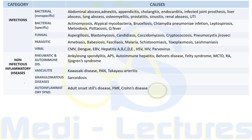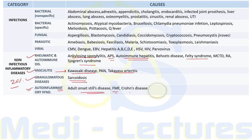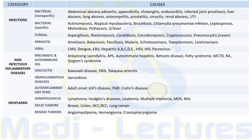Non-infectious inflammatory diseases (NIIDs) include: rheumatic and autoimmune diseases such as ankylosing spondylitis, antiphospholipid syndrome, autoimmune hepatitis, Felty syndrome, and Sjögren syndrome; vasculitides like Kawasaki disease and Takayasu arteritis; granulomatous diseases like sarcoidosis; and auto-inflammatory syndromes including adult-onset Still's disease, familial Mediterranean fever, and Crohn's disease. Neoplasms causing PUO most commonly include hematological malignancies: malignant lymphoma, Hodgkin's disease, leukemia, multiple myeloma, myelodysplastic syndrome, and non-Hodgkin's lymphoma; solid tumors of breast, colon, HCC, RCC, and lung; and benign tumors like angiomyolipoma, hemangioma, and craniopharyngioma.